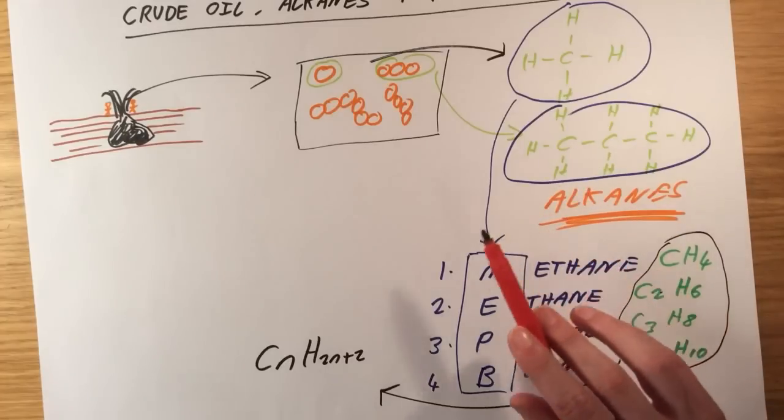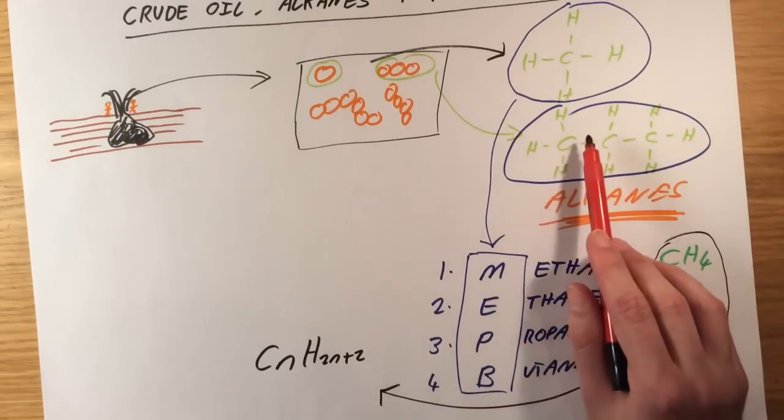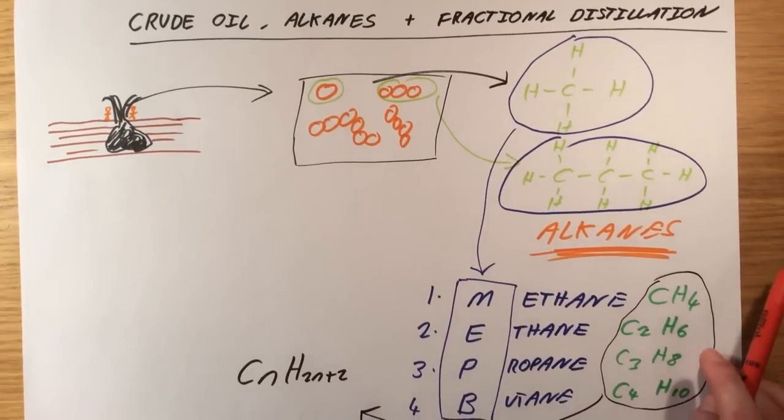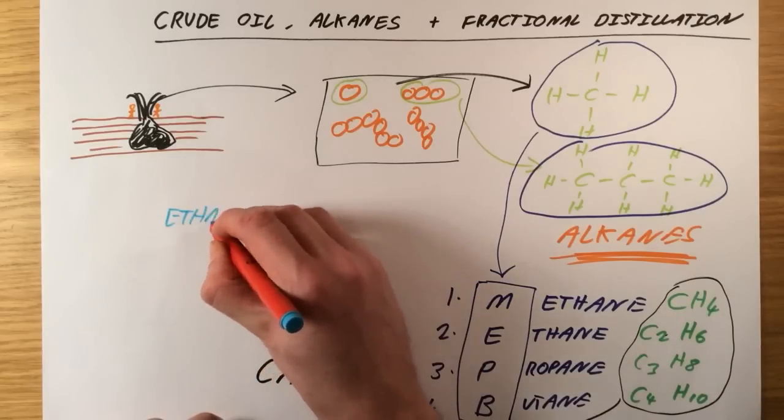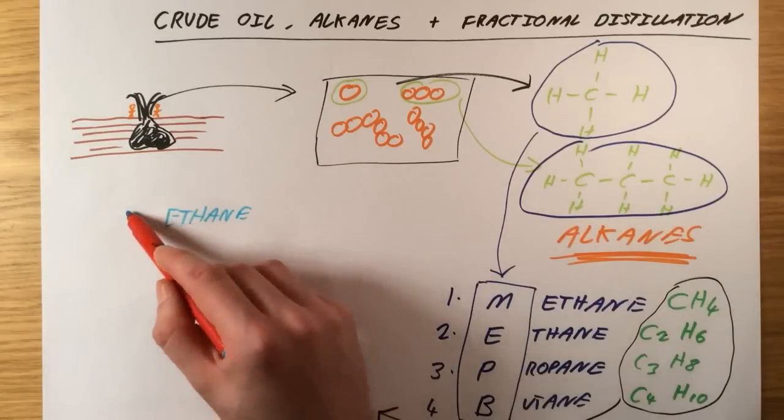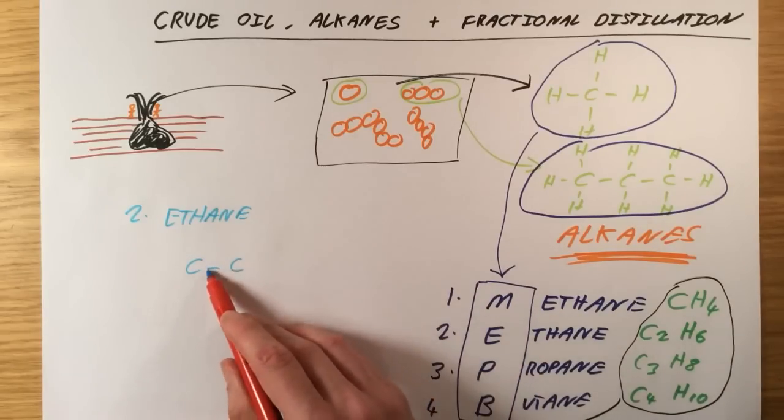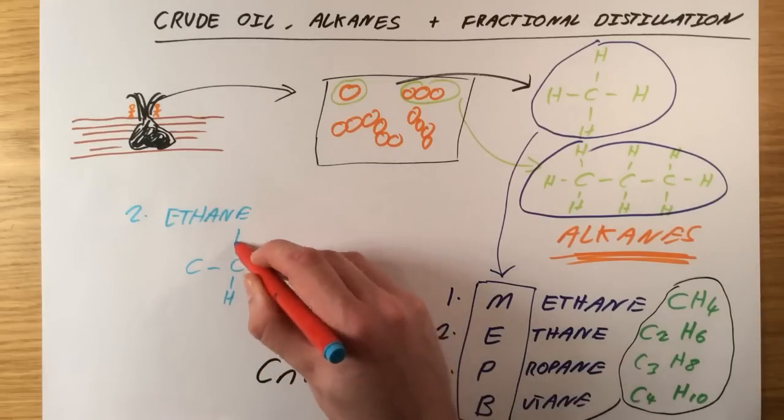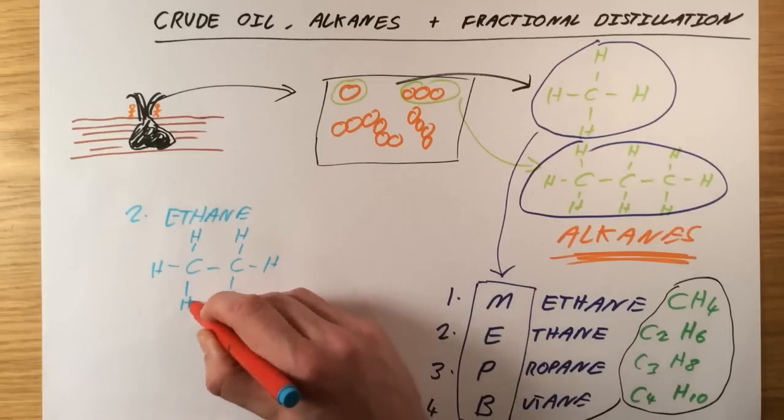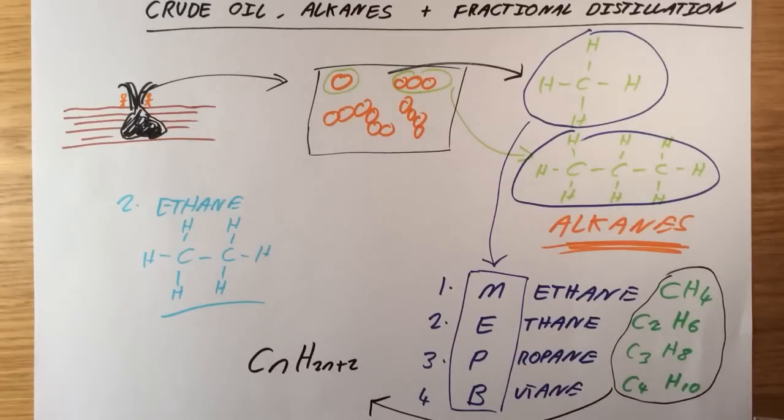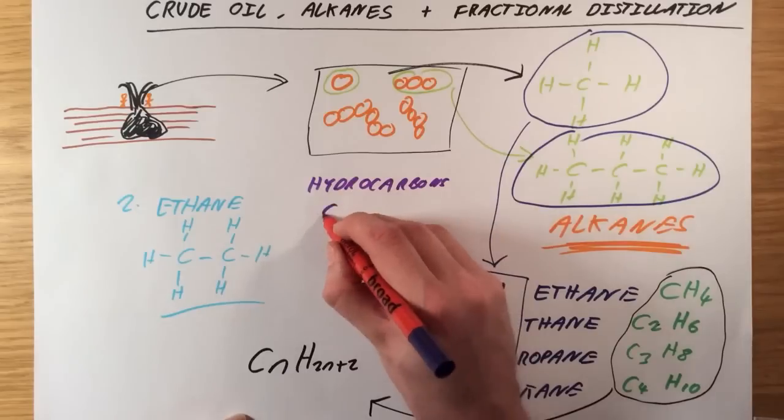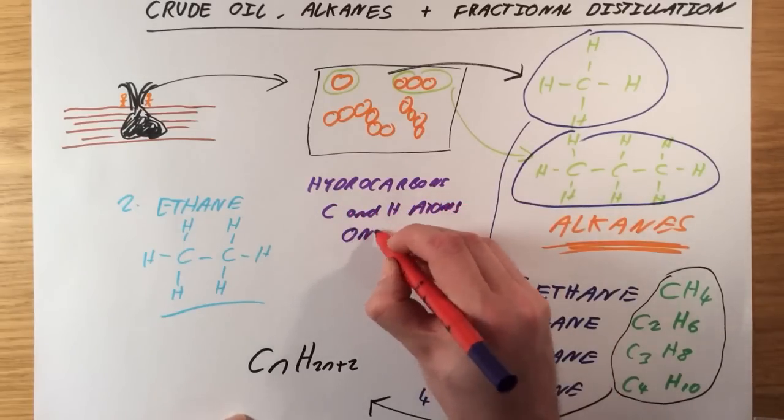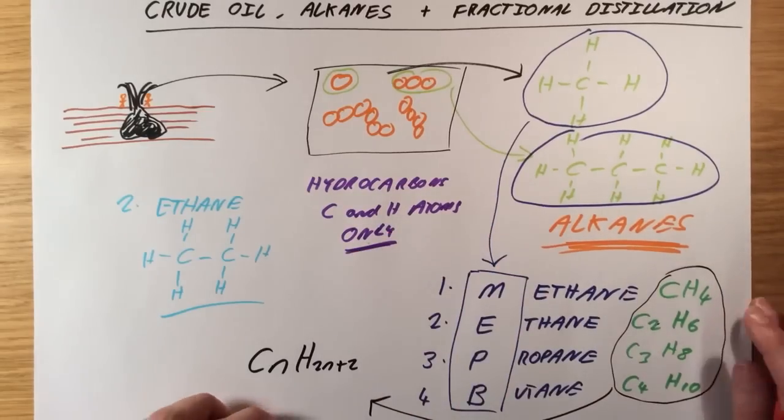So my alkanes, they've got entirely single bonds, and every carbon atom always has to have four covalent bonds to it. So let's say you were asked to draw the structure of ethane. Because it's ethane, you can have all single bonds. You'd simply draw two carbon atoms connected by a single bond, and then make sure every carbon has got a total of four single bonds to it. What is important to remember is that by definition, hydrocarbons contain carbon and hydrogen atoms only. They're not allowed to contain any other elements.